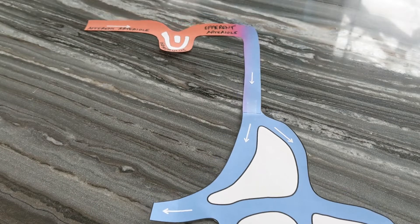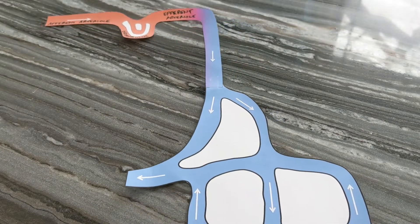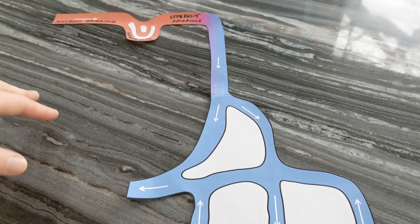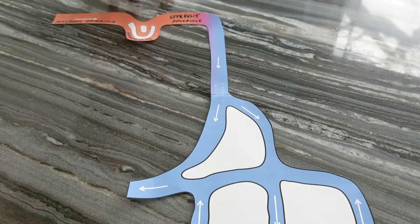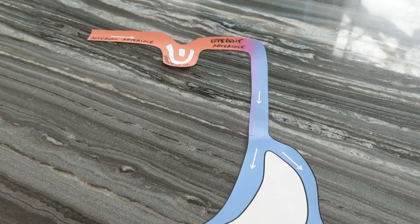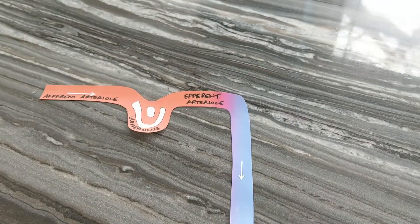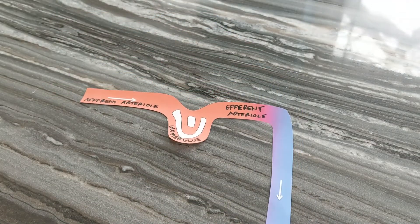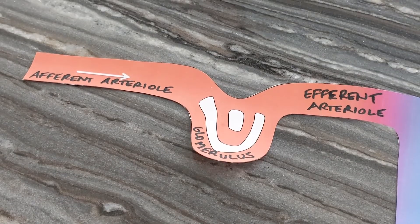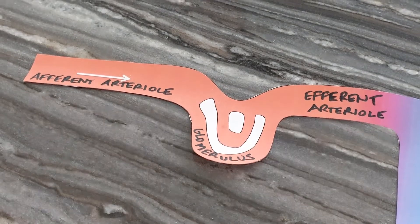Let's start with the parts of the nephron. If you have this model, make sure that all of the parts of your nephron are labeled. Origami organelles labeled some parts, but not all of them, so I've added some labels.